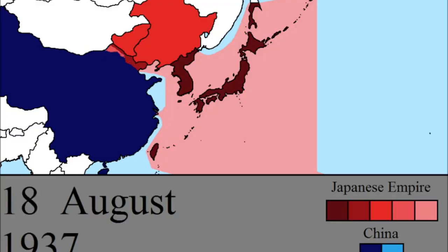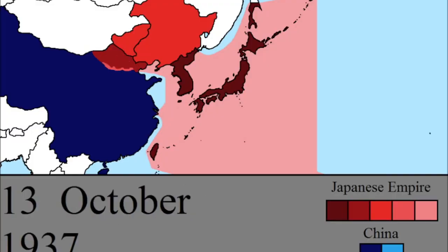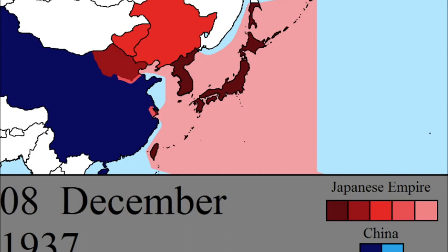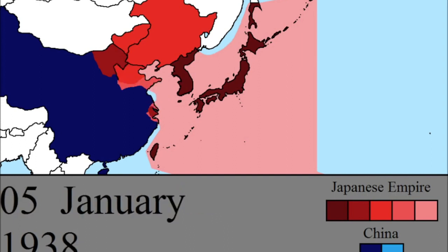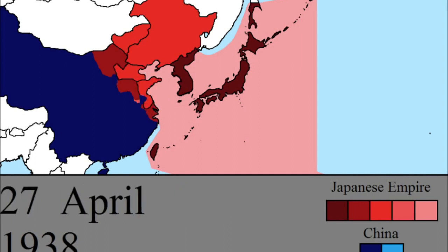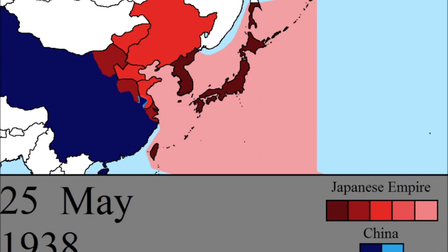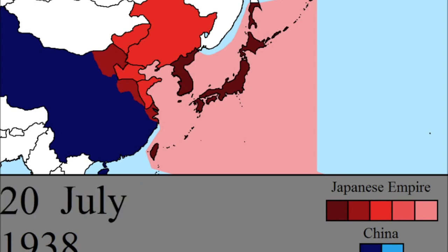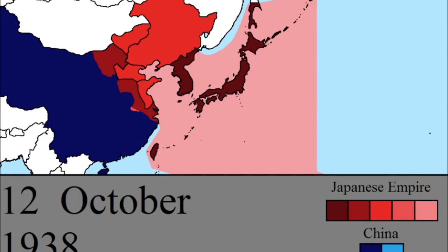Meanwhile, Japan really needed natural resources and invaded China. China was going through a civil war at the time, so Japan was able to take a lot of it, and eventually China and Japan started a war with each other. Japan, Germany, and Italy all formed an alliance called the Axis Powers.